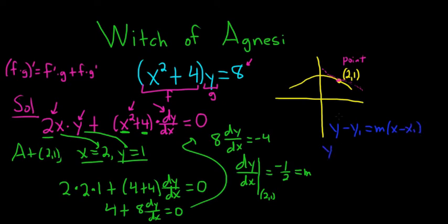So our y₁ here is going to be 1 and our x₁ is 2. So it'll be y minus 1 equals and our m is negative 1 half and then it's x minus 2.